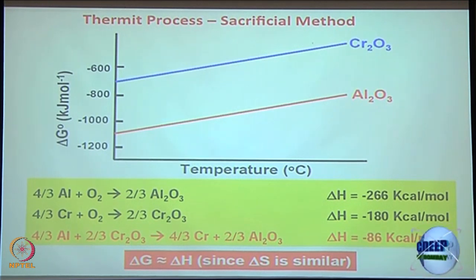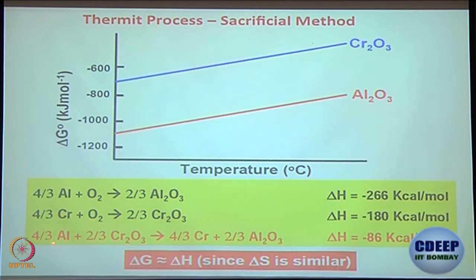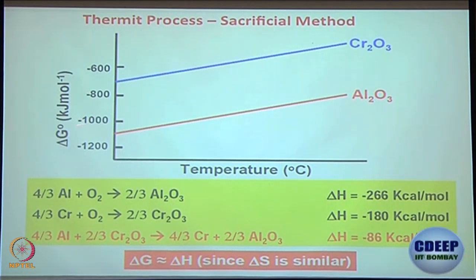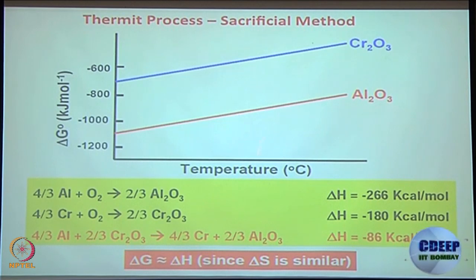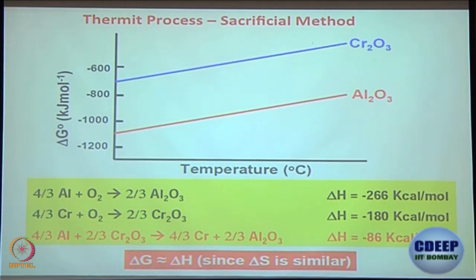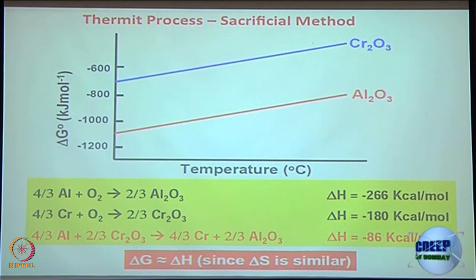This is the reaction used in the thermite process. Technically, you can utilize aluminum to react with chromium oxide to get pure chromium, because from the Ellingham diagram you can see aluminum has a more negative delta G compared to chromium. So chromium oxide can be converted to chromium by using aluminum, because aluminum oxide formation is more favorable than chromium oxide. Whatever is at the bottom of the Ellingham diagram will be getting oxidized.